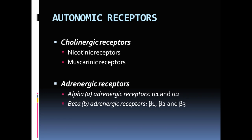To summarize: norepinephrine stimulates alpha receptors more than beta receptors, while epinephrine stimulates both alpha and beta receptors equally. There is also a synthetic drug called isoproterenol (isopropyl norepinephrine) that acts exclusively on beta receptors, excluding alpha receptors, and can be used as a drug to manipulate the sympathetic autonomic nervous system.